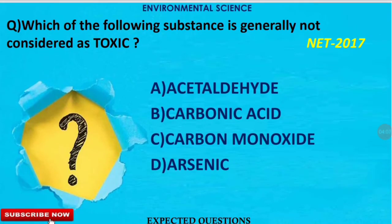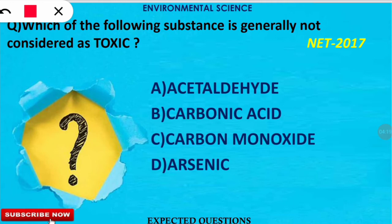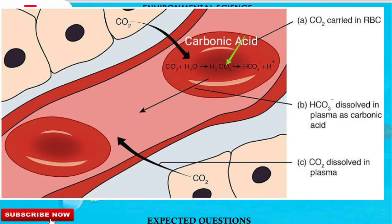The next question is: which of the following substances is generally not considered toxic? The correct option is option B. Carbonic acid, whose formula is H2CO3, is not considered toxic because it is present in the human body to transport carbon dioxide in the blood.